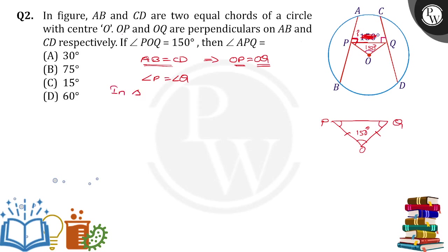In triangle POQ, angle P plus angle POQ plus angle Q equals 180 degrees. Since angle Q equals angle P, we have 2 times angle P plus 150 equals 180. Therefore, 2 times angle P equals 30.